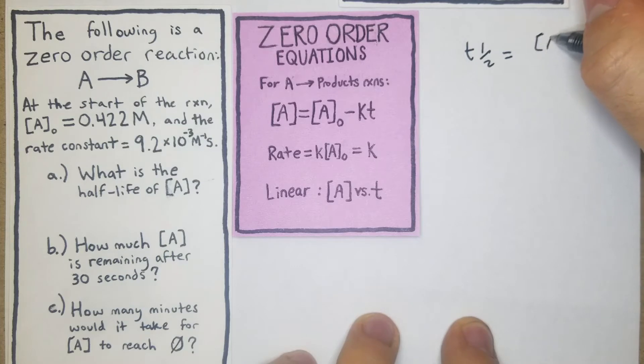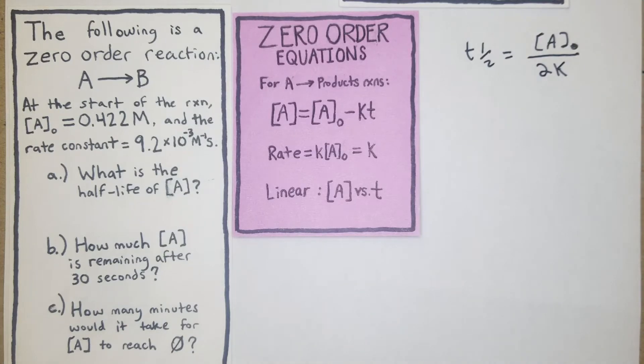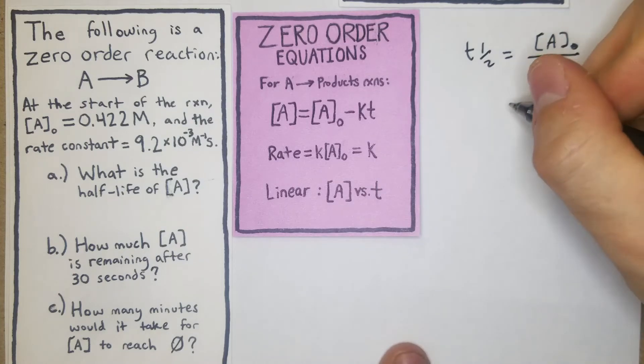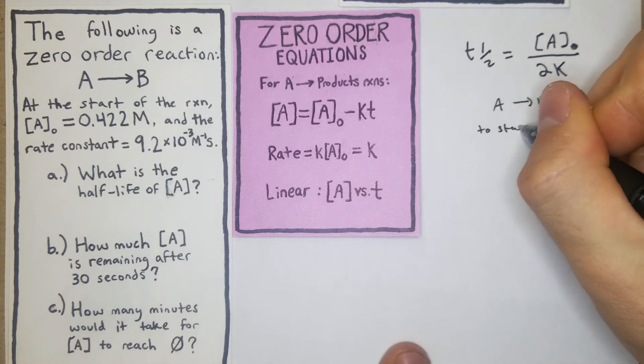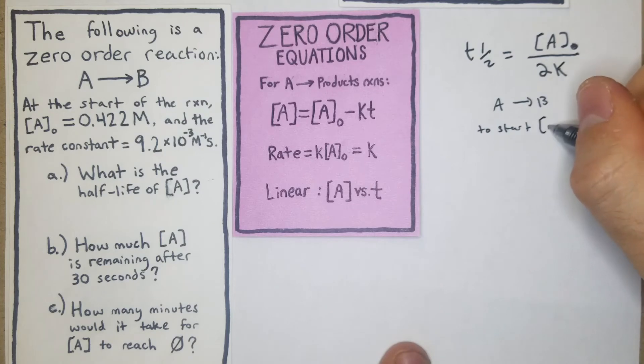is equal to [A]₀ over 2K. And what's significant about the order here and why we differentiate zero from first and second is they're all going to have a different formula here for half-life.